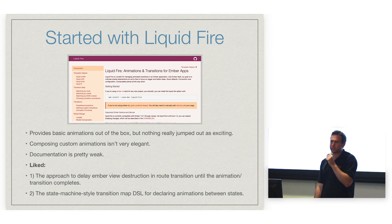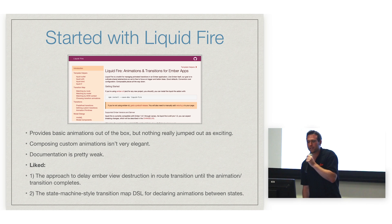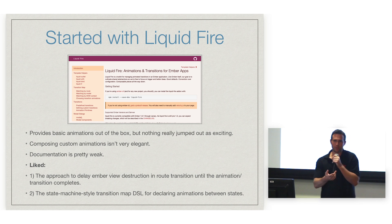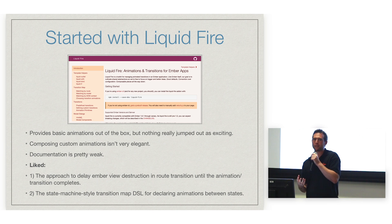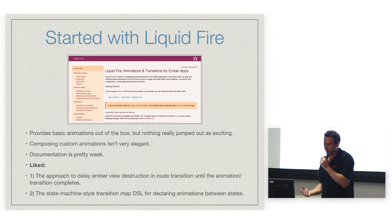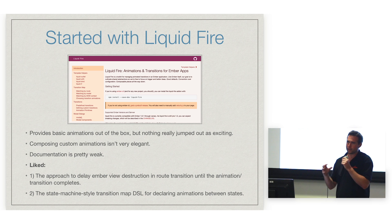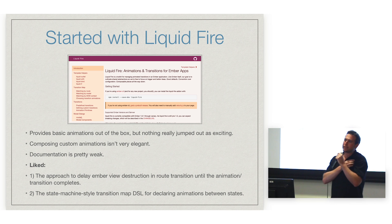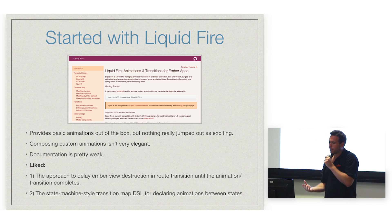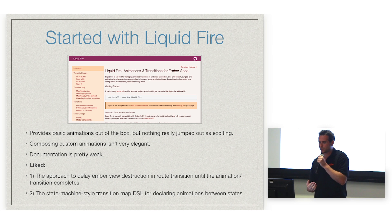So I first started with Liquid Fire — this was a few weeks ago — it's kind of the new hotness in the Ember world for animations. Some things I didn't like about it: it's based on Velocity.js. David and Cameron were talking about jQuery animate, and Velocity is basically a rewrite — it's supposed to be a lot more performant. But it's still JavaScript animations, and CSS is always going to be more performant than JavaScript. It basically provides an in-Ember DSL for composing animations. It was fairly easy to get up and running and do some simple animations right away, but when I tried to do more complex stuff, it just got a little messy. And also the documentation wasn't very good.